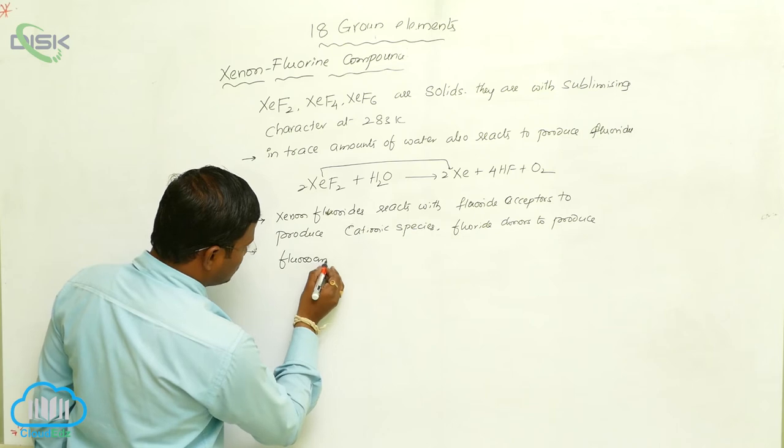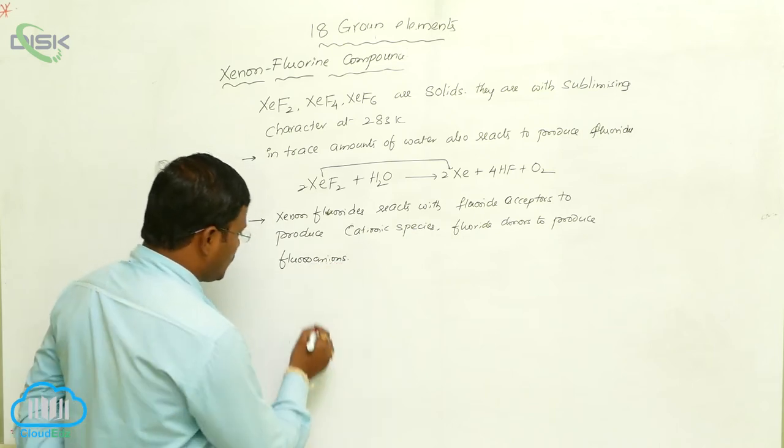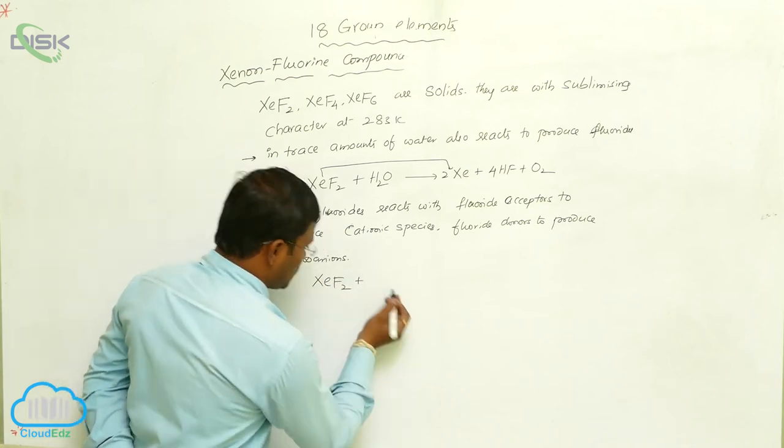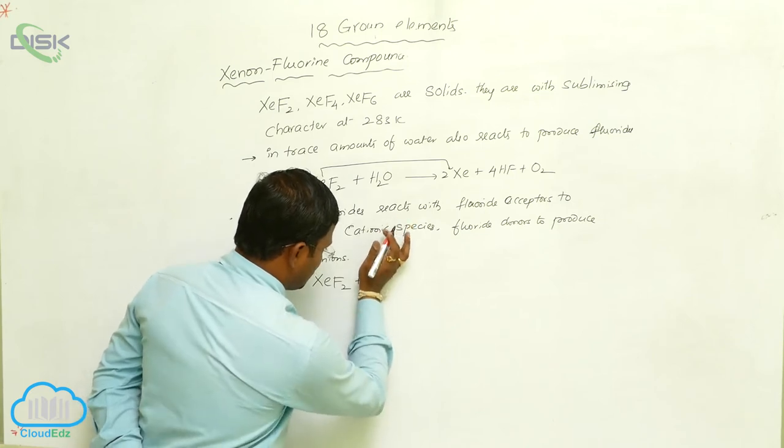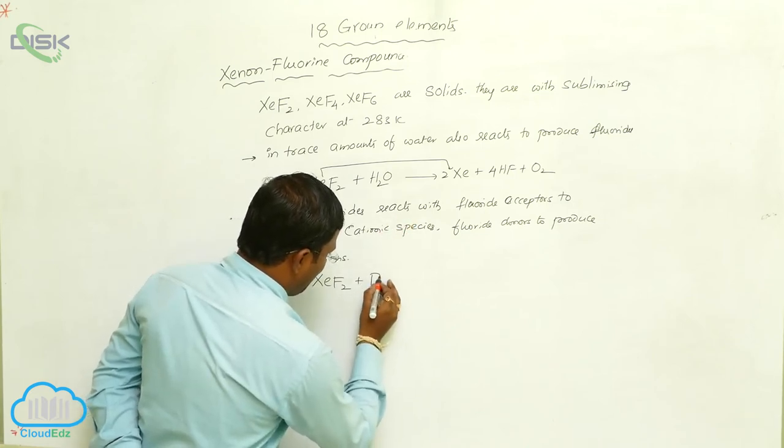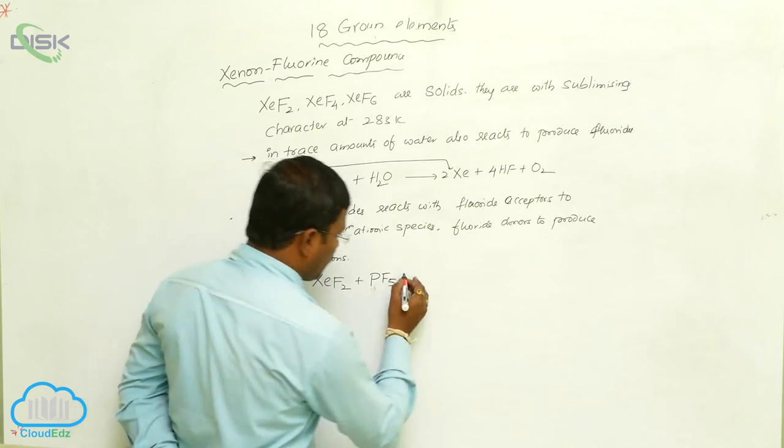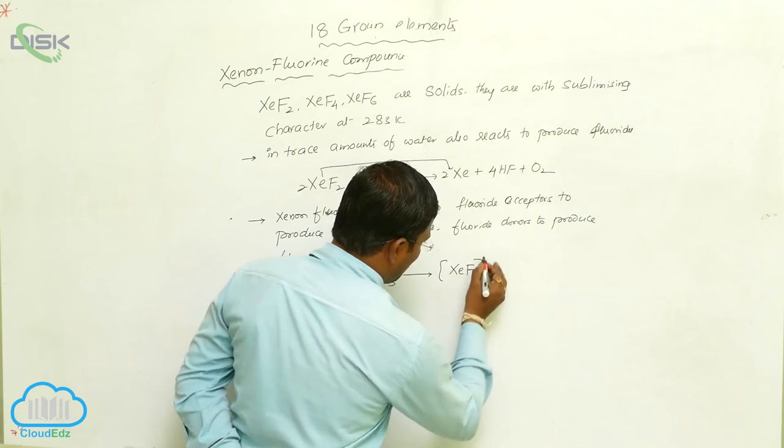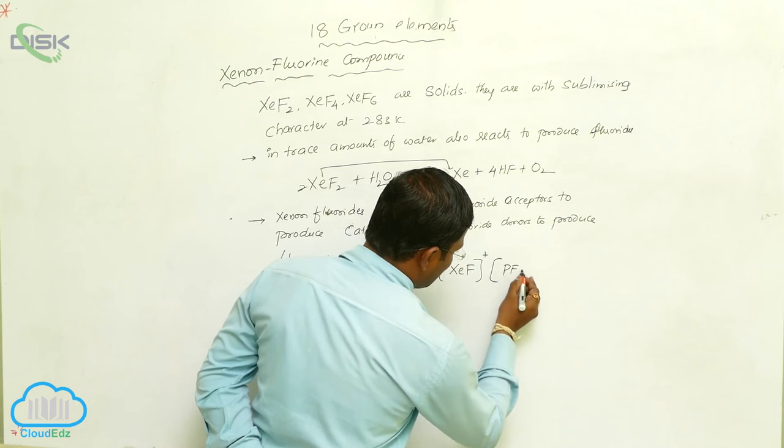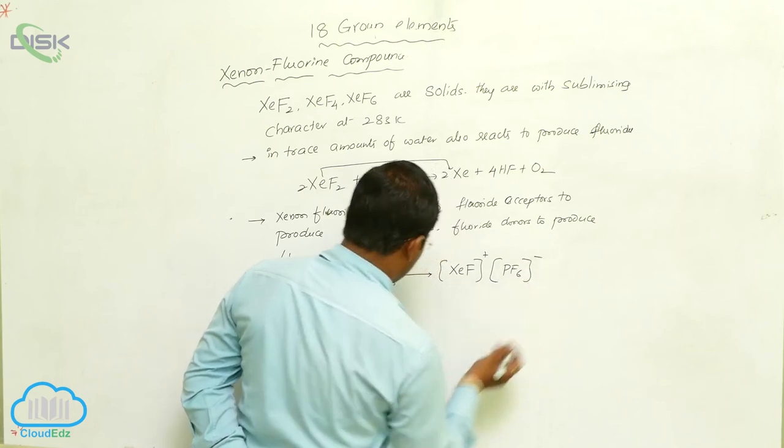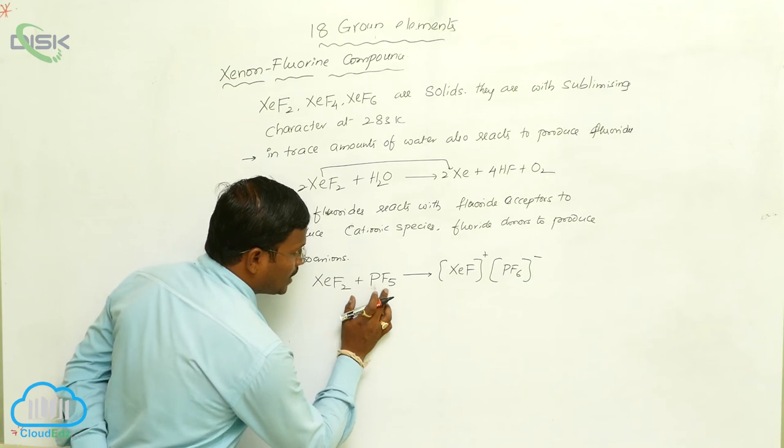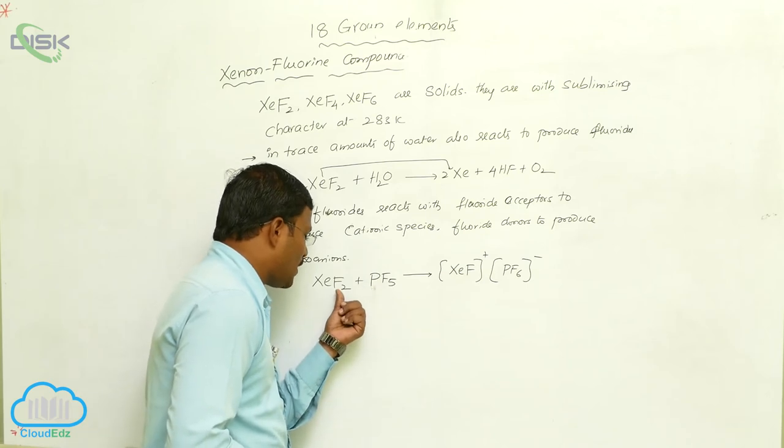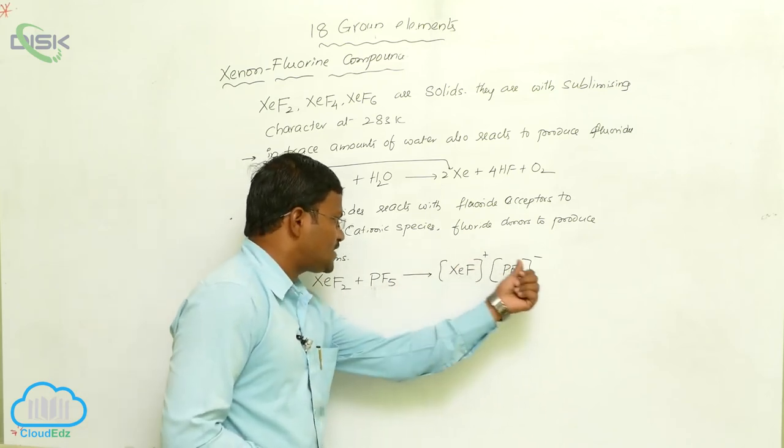Let us have some examples. When xenon difluoride reacts with PF5, phosphorus pentafluoride, it produces XeF+ and PF6-. Here, phosphorus pentafluoride acts as a fluoride acceptor. It accepts fluoride ion from xenon difluoride and converts into PF6-.